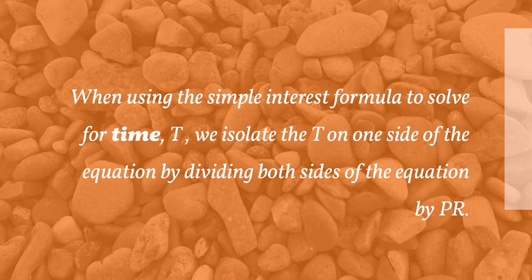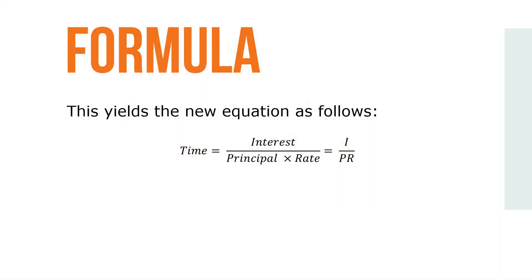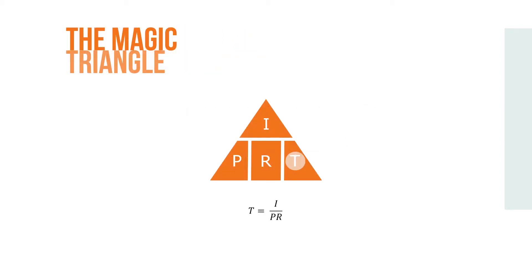When using the simple interest formula to solve for t, we isolate t on one side of the equation by dividing both sides by PR. This yields a new equation: time equals interest over principal times rate, or t equals I over PR. We can also find the formula using the magic triangle by covering the unknown variable t, so t equals I over PR.